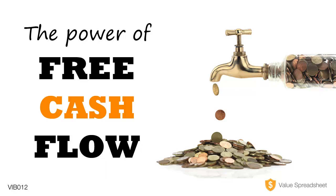So first of all, what is free cash flow? A company generates cash by just running its business — it is called cash from operations. You can find it on the cash flow statement, which is one of the financial statements we discussed in an earlier episode. On the cash flow statement, you see one figure, which is the cash from operating activities, or cash from operations.